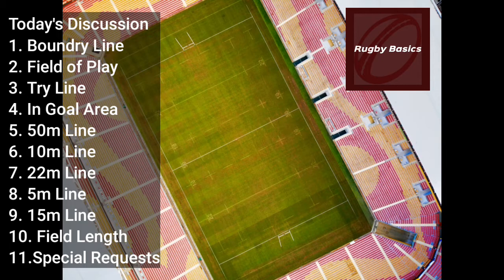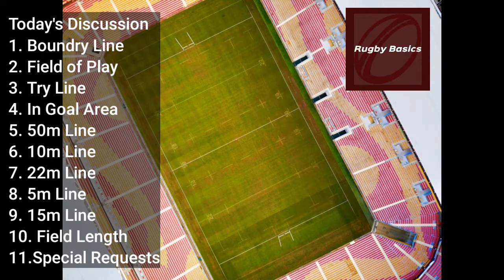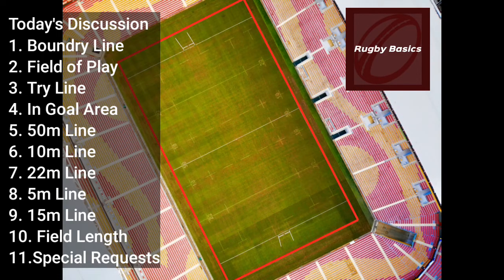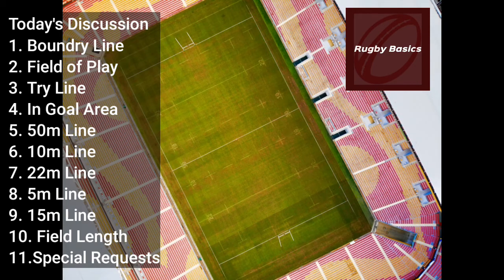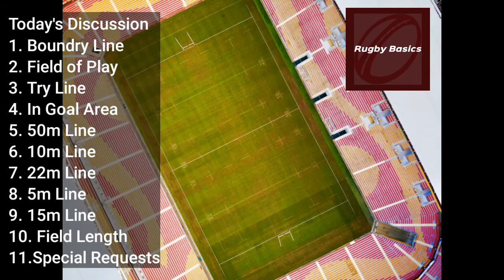There are a few lines and areas you need to understand as a coach and as a rugby player to improve your rugby knowledge. The first line to look at is the boundary line. When a ball passes this line, the game will stop. As a rugby player, make sure you keep the ball within the boundary lines, otherwise the game will be stopped and the ball will most probably be turned over to the opposition.